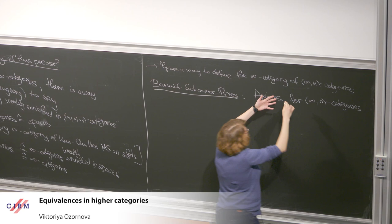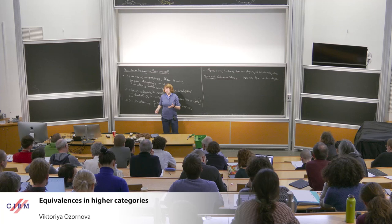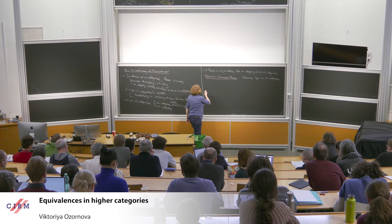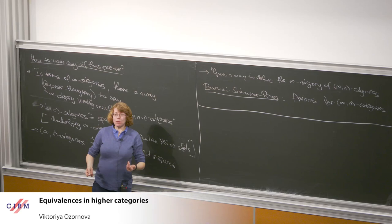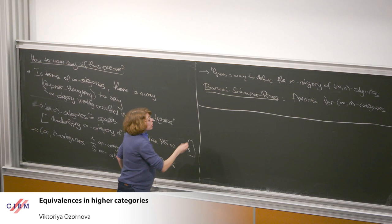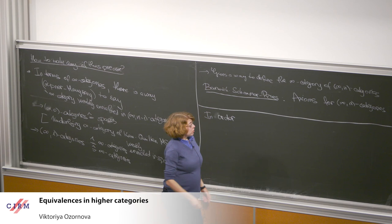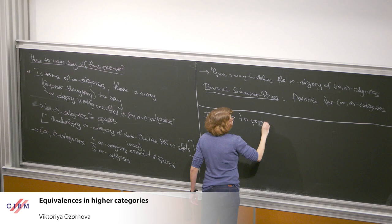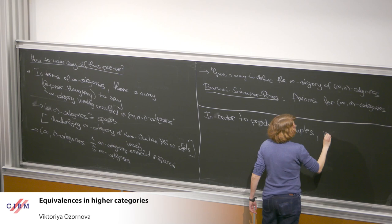This infinity category of infinity-n categories is well-defined and can even be described axiomatically. That's all really nice, but as you see from my setup, I want to produce examples, and to do so in many contexts you need something more concrete that you can get your hands on — and these are usually models.